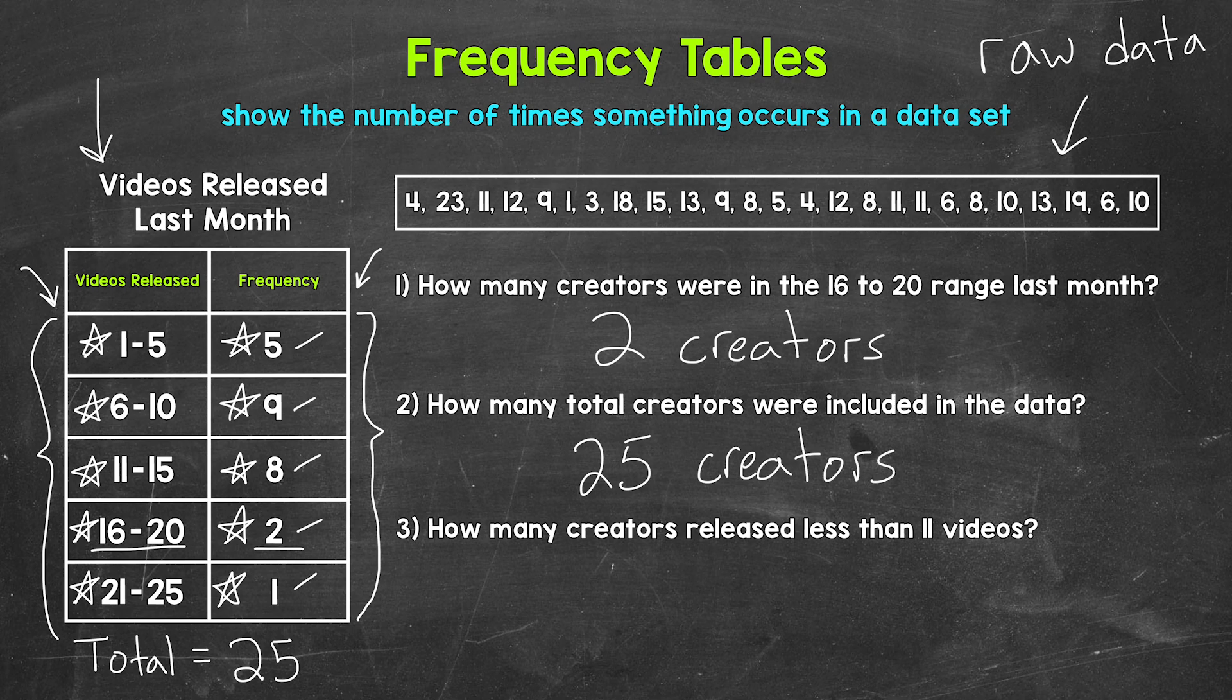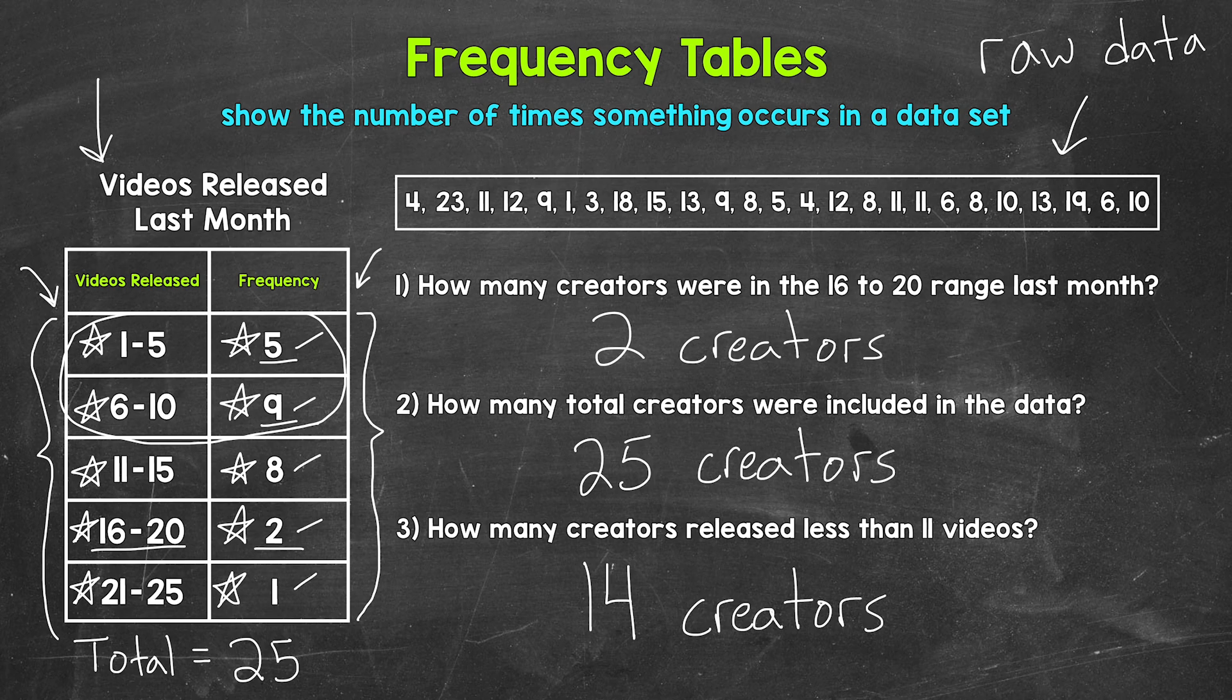And then lastly, let's move on to number 3, where we have how many creators released less than 11 videos. So less than 11. 11 is not included. So we are going to look right here. So the 6 to 10 and the 1 to 5 videos released. So we have 5 creators and 9 creators. So 5 plus 9 gives us 14 creators released less than 11 videos last month.